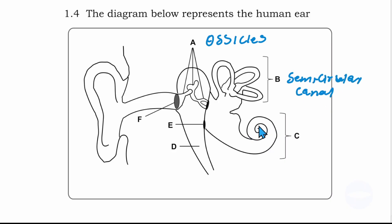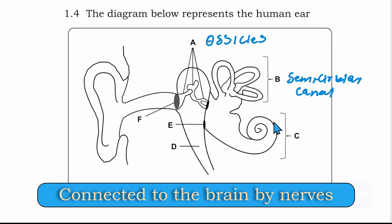Number C is the cochlea. That is where the auditory nerve is connected. The auditory nerve leaves the cochlea to the brain. So this is the cochlea.